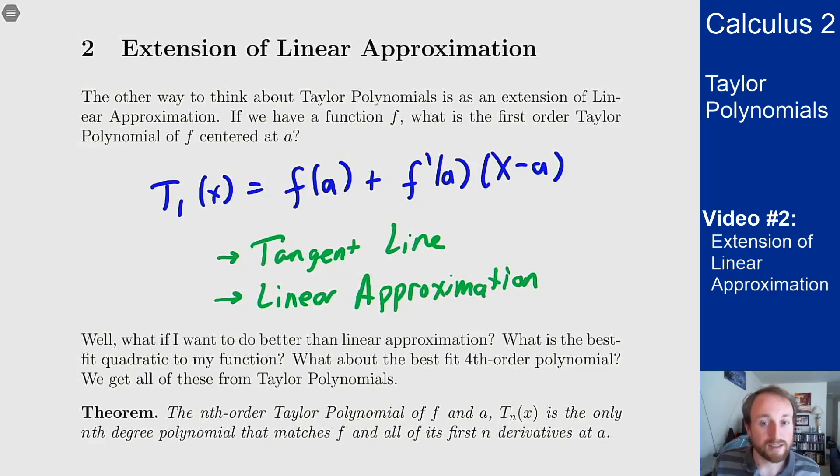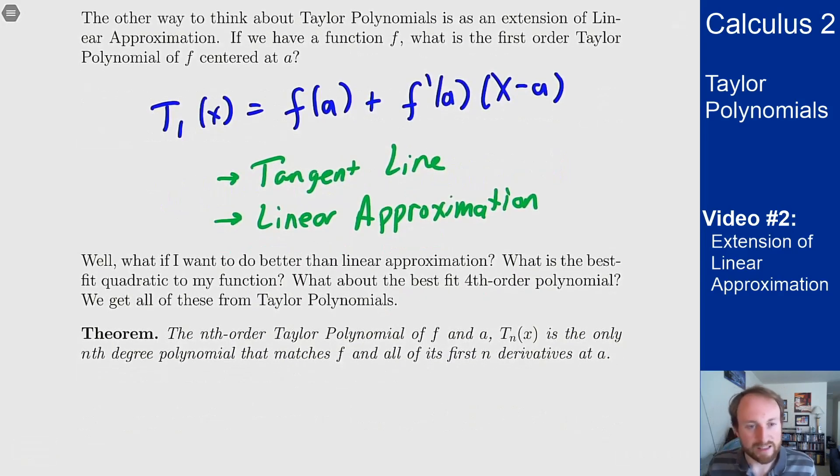T1 was the linear approximation or best fit line, and it turns out that Tn for any n is the best fit nth degree polynomial to the function at that point. By best fit I mean: the nth order Taylor polynomial is the only nth degree polynomial that matches f and all of its first n derivatives at point a.